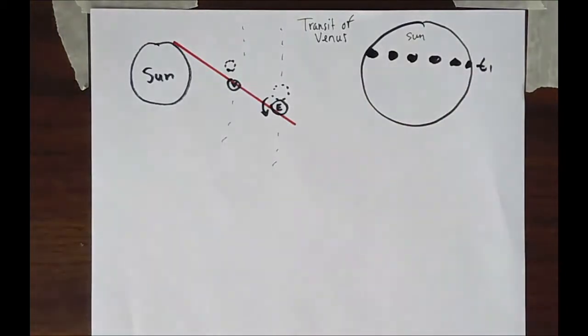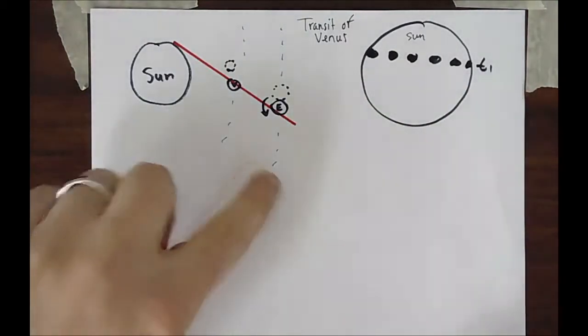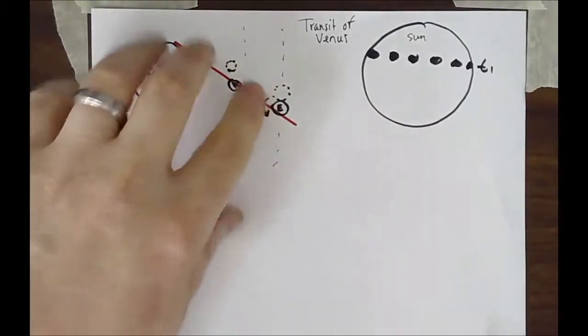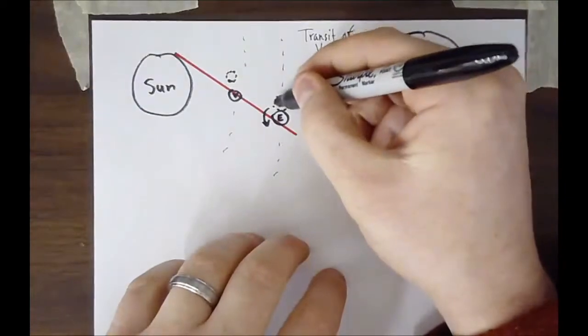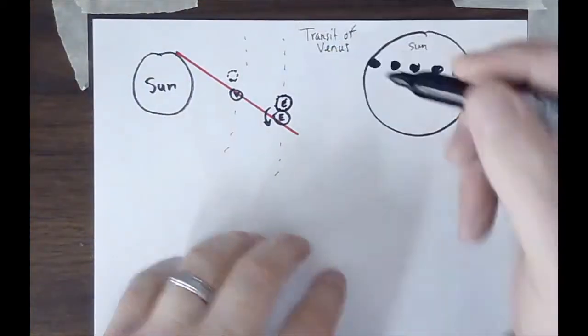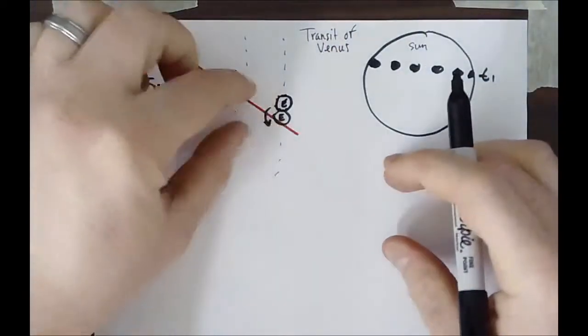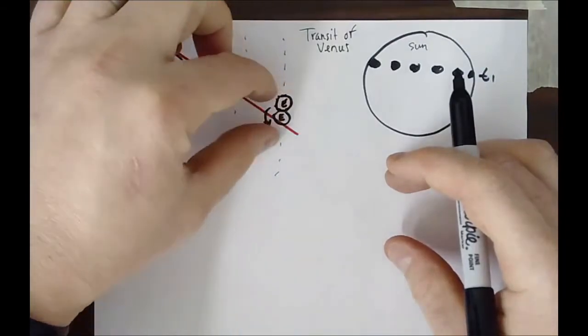Now what's interesting is during that time, the Earth is not static, it's moving, it's rotating, or I should say revolving around the Sun, and let's say we let it move a distance of the Earth. As this time turns, the Earth has moved a very small amount in its orbit.